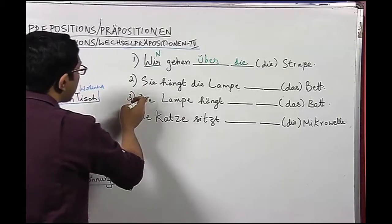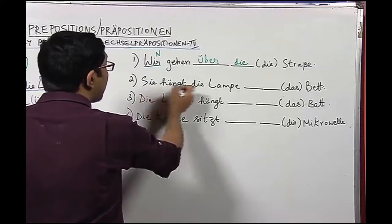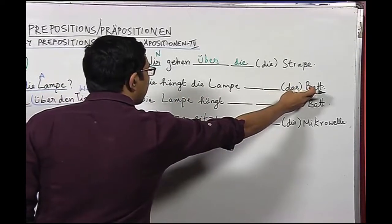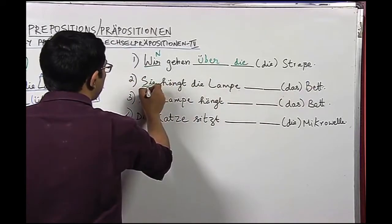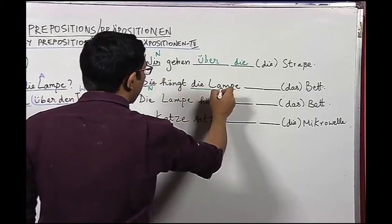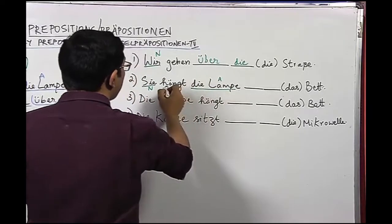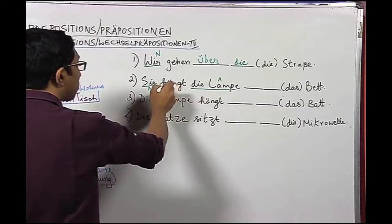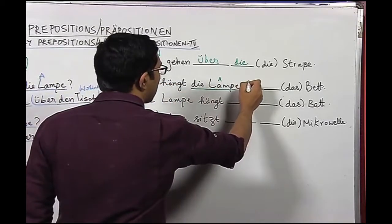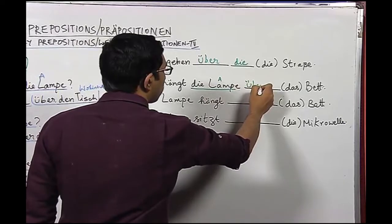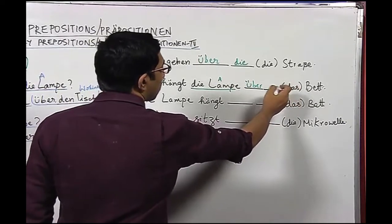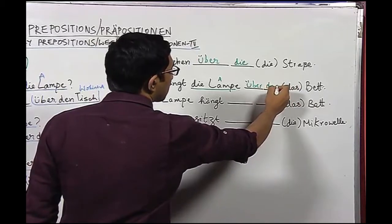Sentence number two: Sie hängt die Lampe über das Bett. Mark the nominative 'sie', the accusative 'die Lampe', and the verb 'hängen' as an accusative verb. We use 'über' as an accusative preposition. Since 'das' remains 'das' in accusative, we write 'über das Bett'.